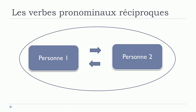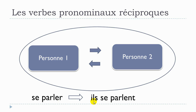Let's see an example — a good one will be se parler. When you get the subject and the verb in the sentence ils se parlent, it's quite clear: they speak to each other. If you want to translate that directly, this is the concept — they speak or they talk to each other — and this is exactly the main concept of les verbes pronominaux réciproques.